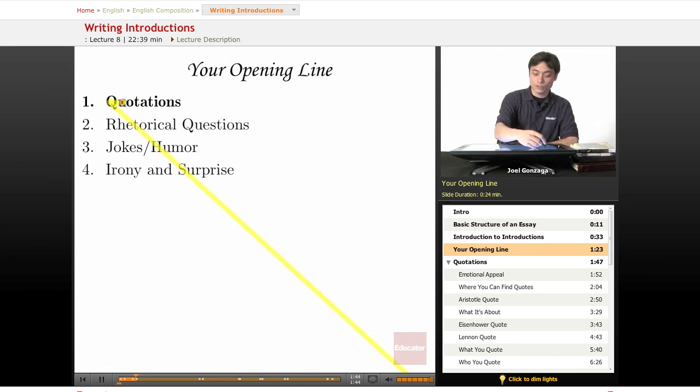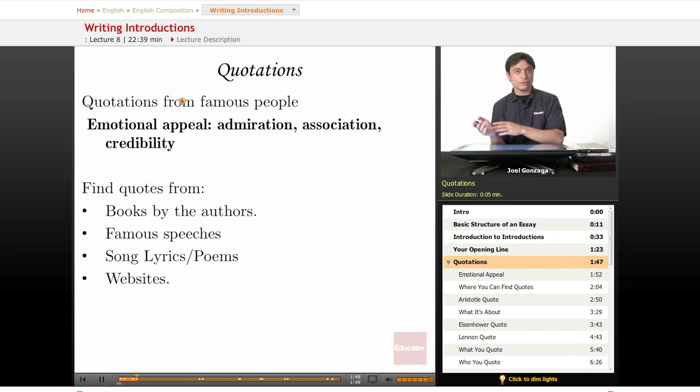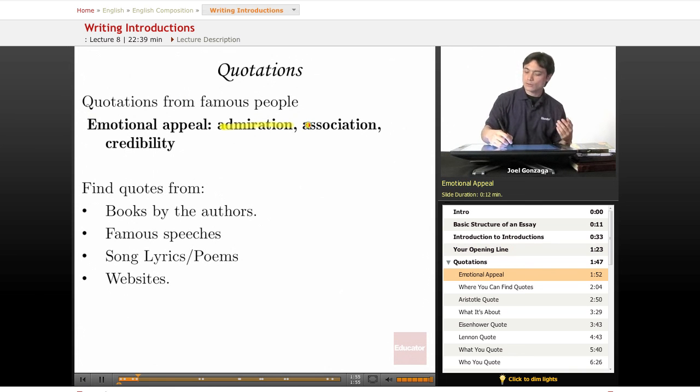The first thing we're going to do is quotations. A quotation has a certain type of emotional appeal. It appeals to someone's sense of admiration. It also associates your paper with a really awesome person, and it will add credibility to whatever else you're going to say next.